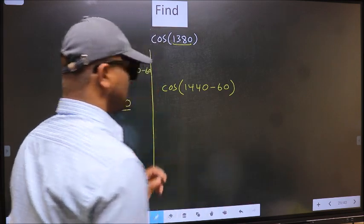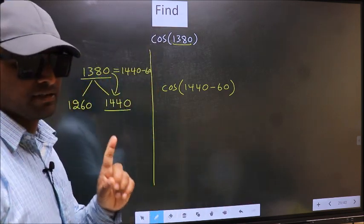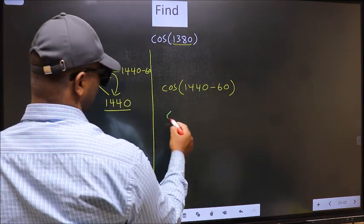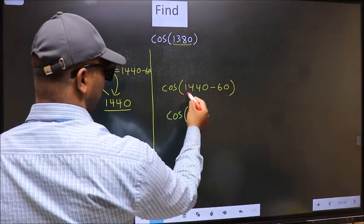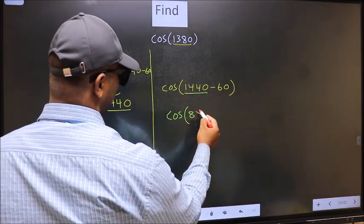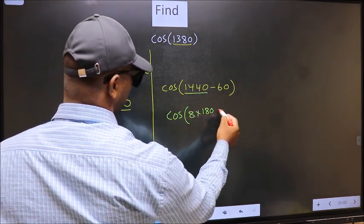This is your step 1. Next, cos... In place of this, now we should write 8 × 180 minus 60.